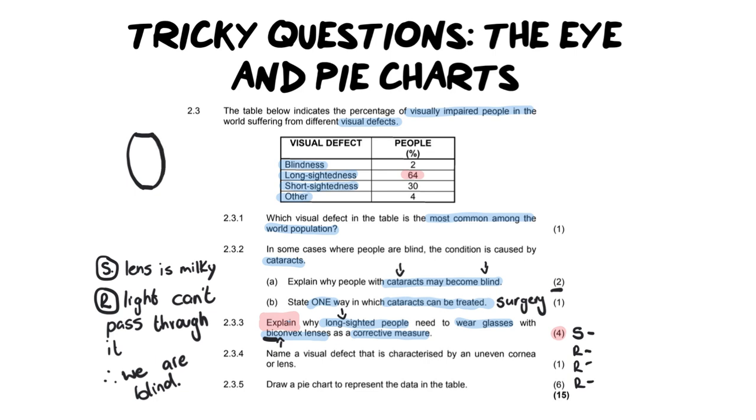What does bi-convex mean? Bi-convex means the lens bulges out. If this is my lens it bulges out like that. That is bi-convex. Bi-concave looks like this where it sinks inwards. They've told us that they need bi-convex lenses. So now what you have to do is explain why long-sighted people need to wear glasses with bi-convex lenses as a corrective measure.